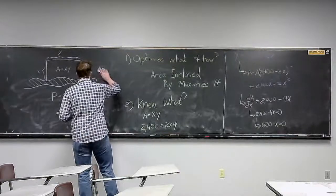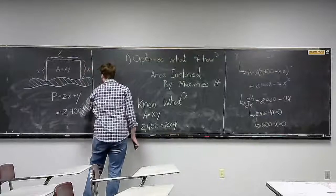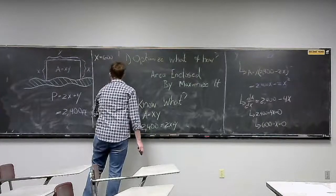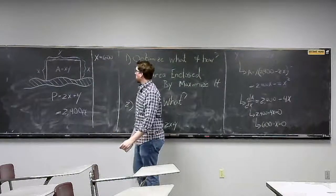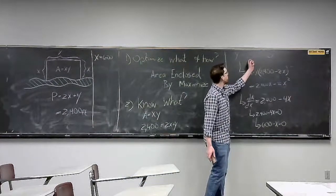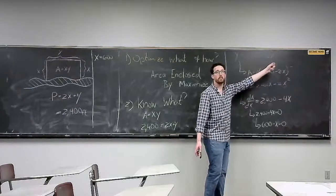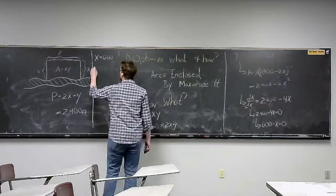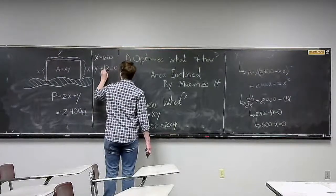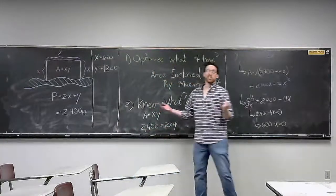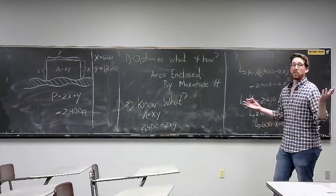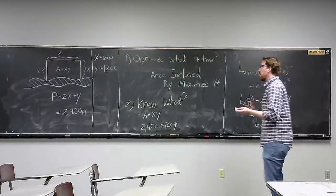So x needs to be 600. And y equals 2,400 minus 2x, which means y equals 1,200. And that's our answer. Now it's kind of quick and easy, and that's the way these problems work.